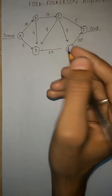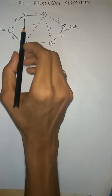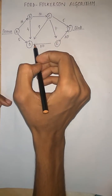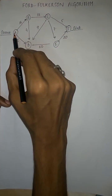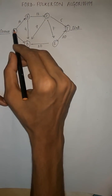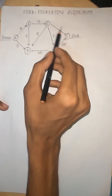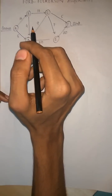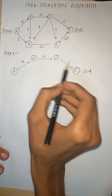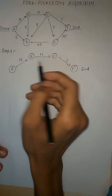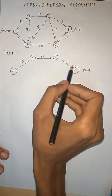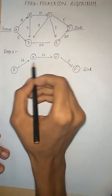Step one: we find any path from A to F, whichever it may be. Let's suppose we take the path A, B, C, F. We have to take the source and it should end at the sink, whatever path it may be.